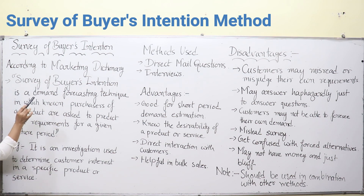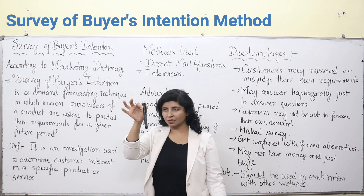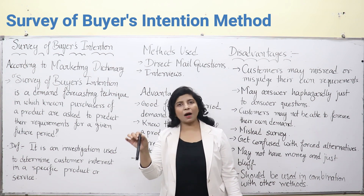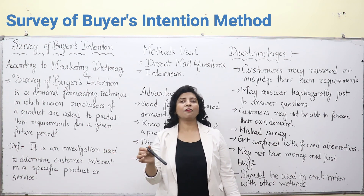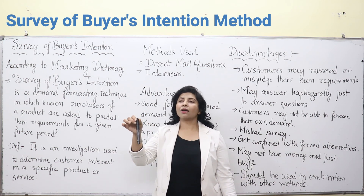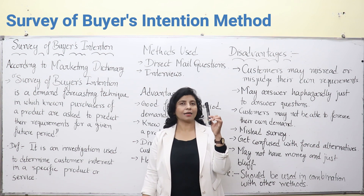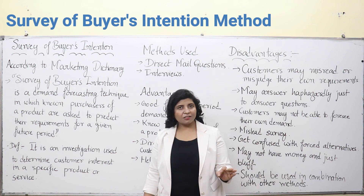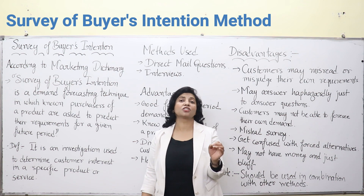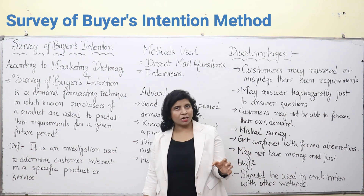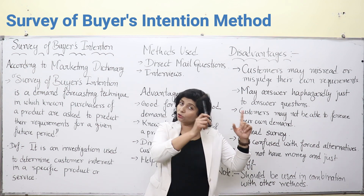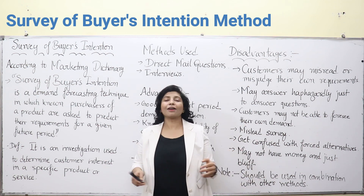An important concept here is 'known purchasers.' Who are the known purchasers? For example, if you want to do a survey regarding markers, normally professors, faculty, or teachers use markers. You can't ask about markers from any household member who doesn't use them. People who use markers can give the best information. Similarly, photographers can give you the best knowledge about cameras, and drivers can give the best knowledge about different cars. Known purchasers are people who use that commodity, know about it, or are experts in it.